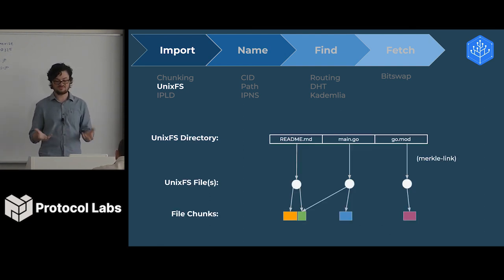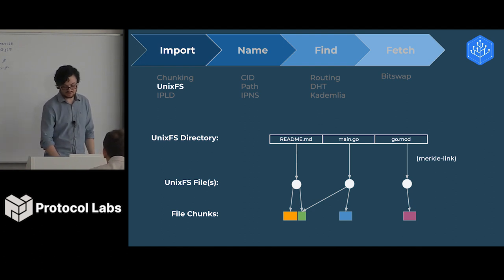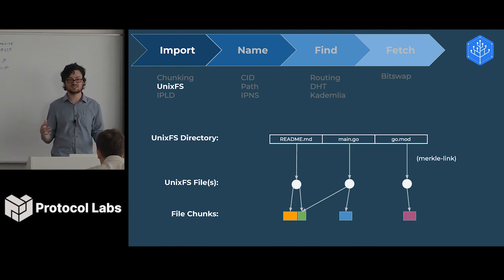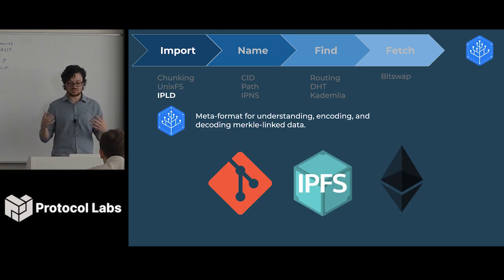Now that we've created the file, we need to create a directory. We do this by just mapping file names to files using hashes or Merkle links. Finally, we've created this logical structure using hashes and blobs of data and data structures, and we need to actually encode it so we can transfer it over the network, store it on disk, and talk about it. For that, we use something called IPLD.